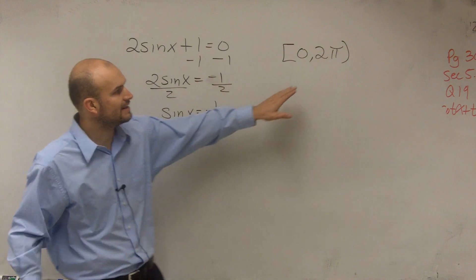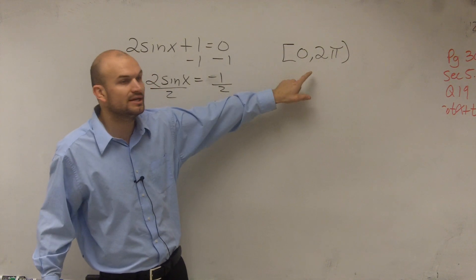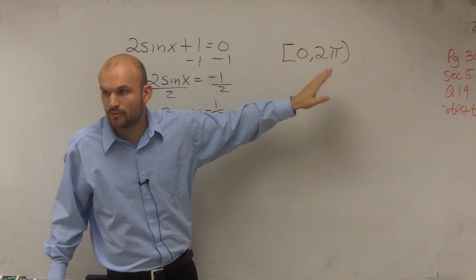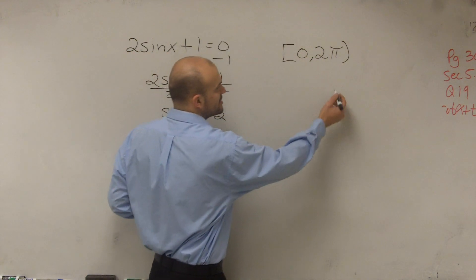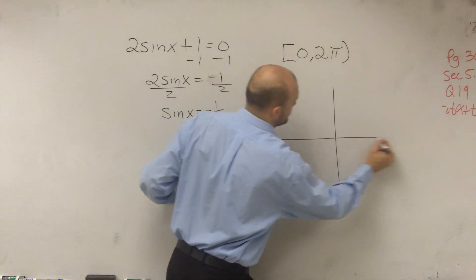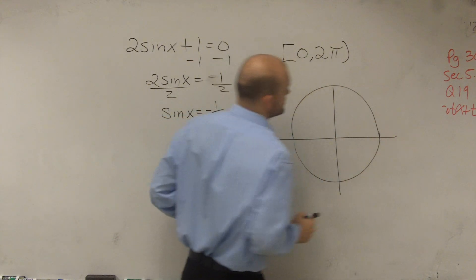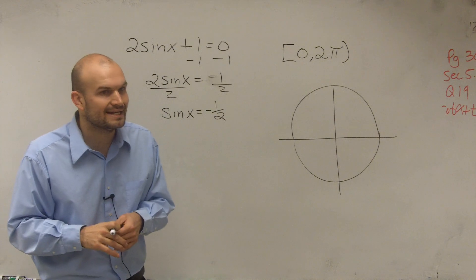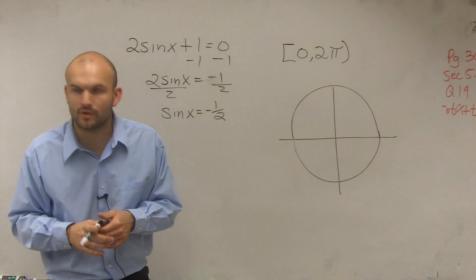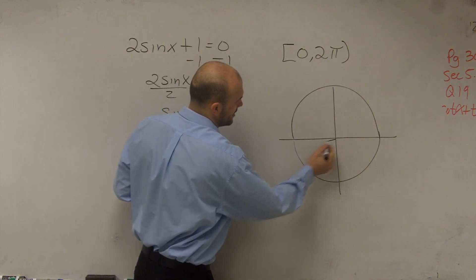All right. And that angle has to be within 0 and 2π. So between 0 and 2π, we look at a part on the unit circle. So we look at when is the sine equal to negative 1 half? Well, there's two points that we have.